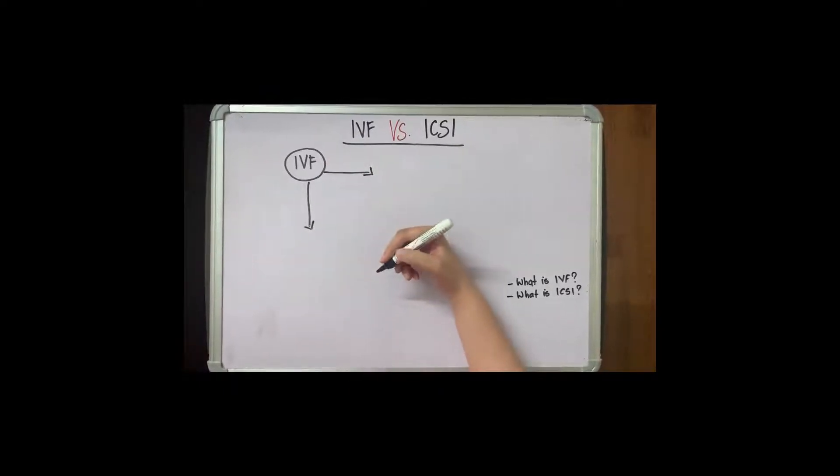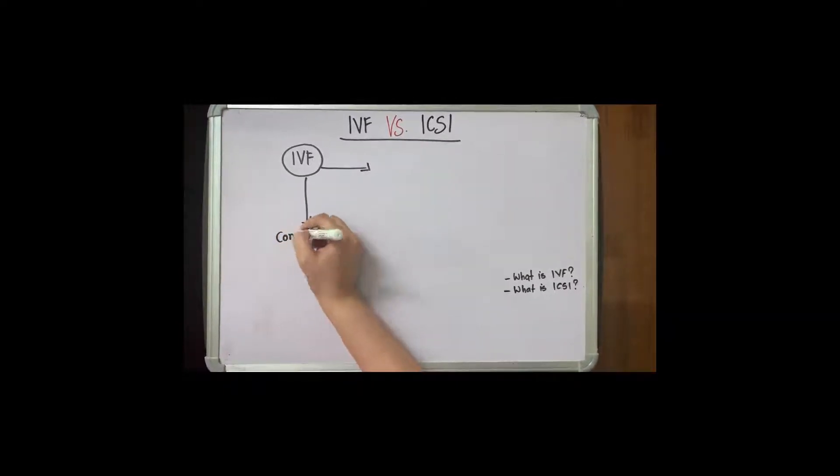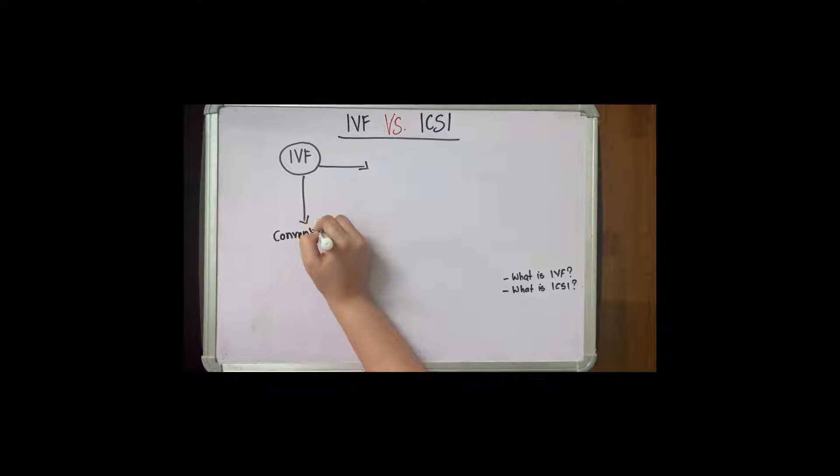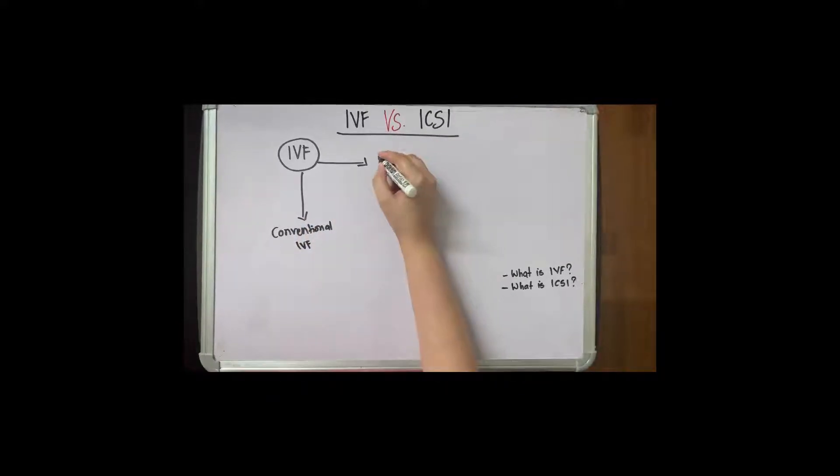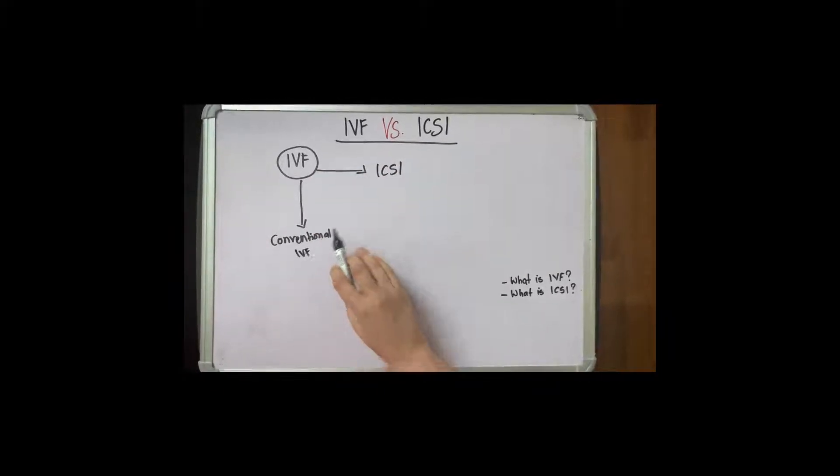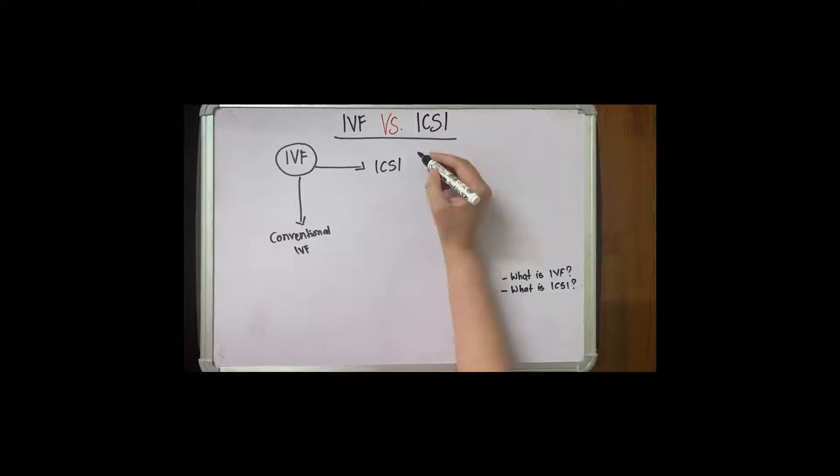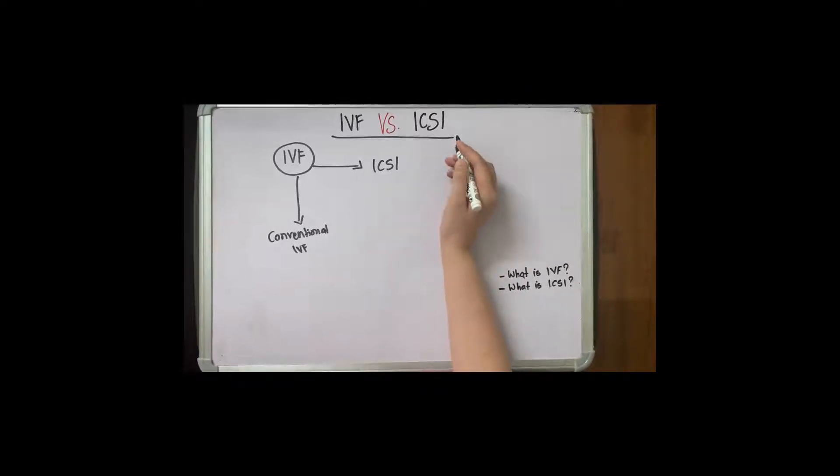There are basically two techniques within it which help you attain parenthood. One is what is known as conventional IVF and the other is what is known as ICSI.